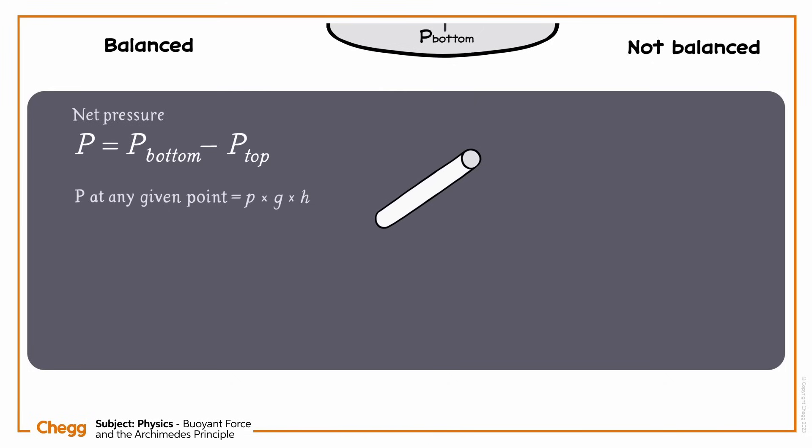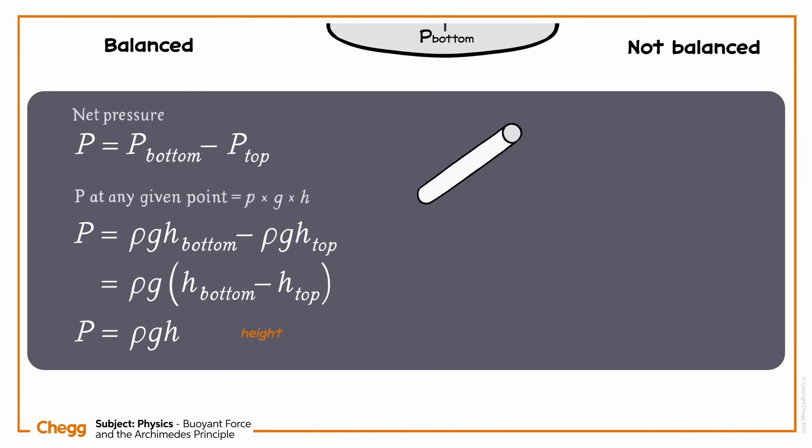So the net pressure on the block can be written as P equals rho G H bottom minus rho G H top, which factors to rho G times H bottom minus H top. H bottom minus H top is simply the height of the object, so let's replace that with H.